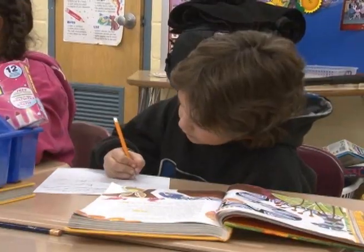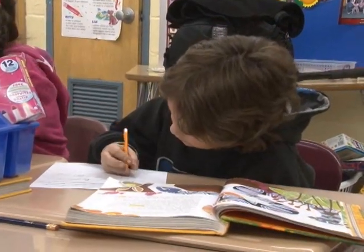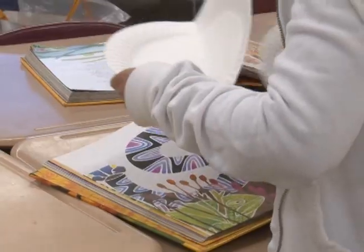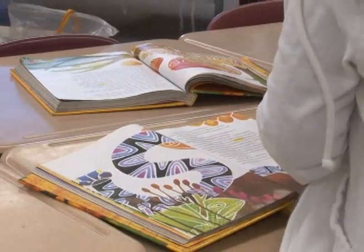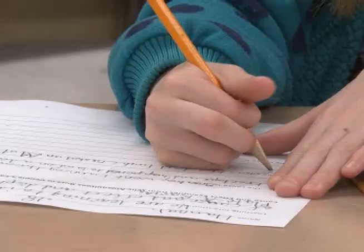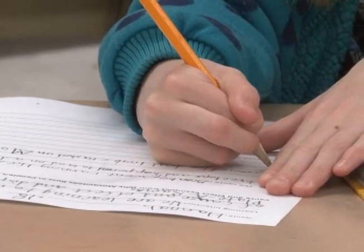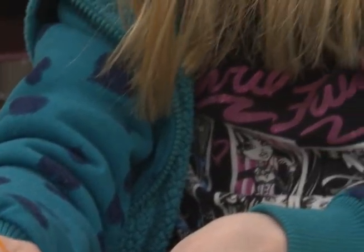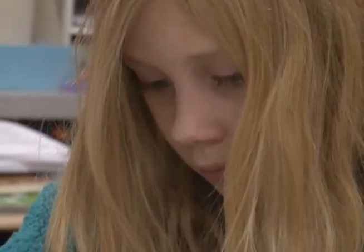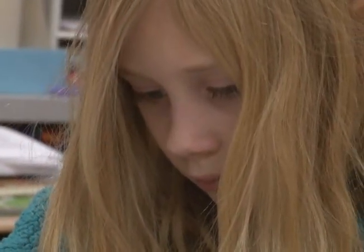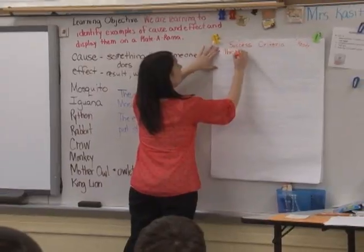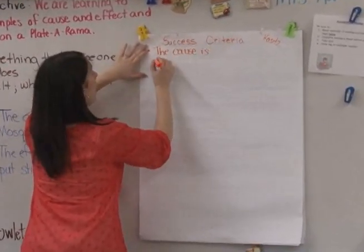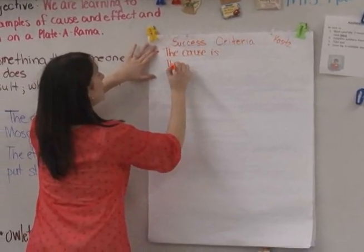Kelly's students were required to come up with four examples of cause and effect and write them on a paper. They could use the book as a resource. Her success criteria specifically outlined what was essential for the completion of the exercise — showing them what they need to be checking and accomplishing in order to meet their objective.